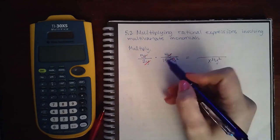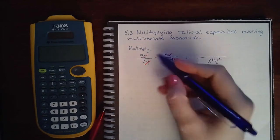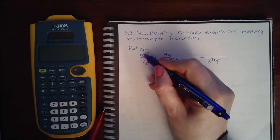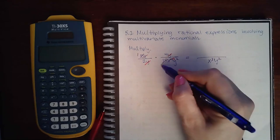I can reduce the 5 and the 15. 5 goes into 5 once. 5 goes into 15 three times.